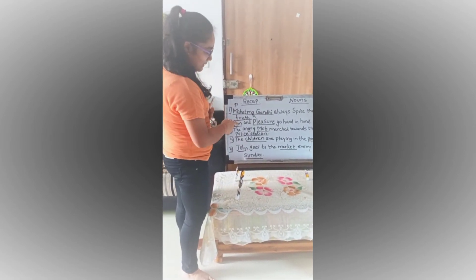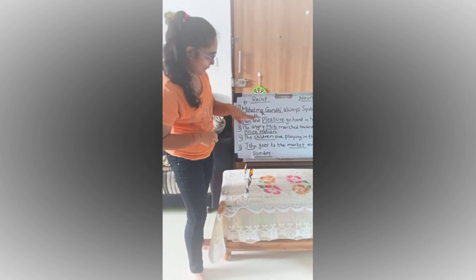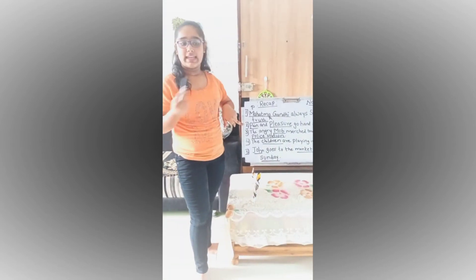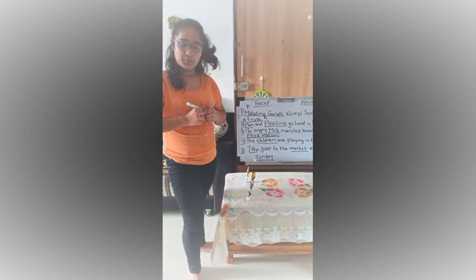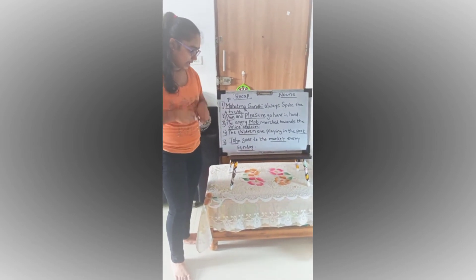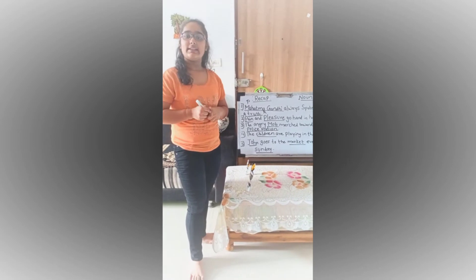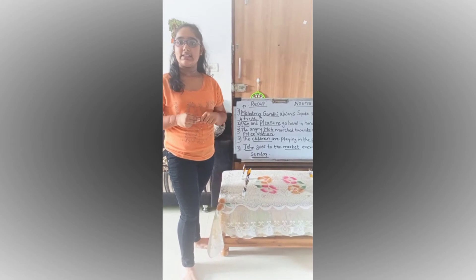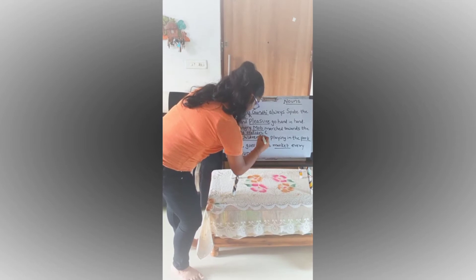Second sentence: pain and pleasure go hand in hand. Here, pain and pleasure are both abstract nouns because they are the names of feelings. Next: the angry mob marched towards the police station. Here, mob is a collection of people, that's why it's a collective noun. And police station is the name of a common place, that's why it's a common noun.